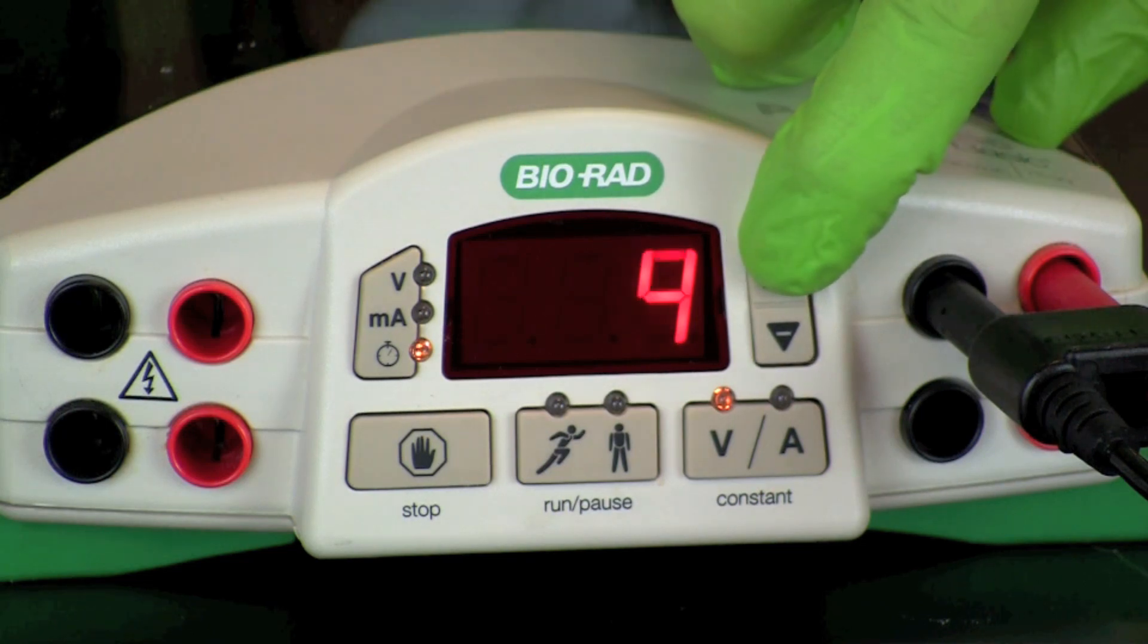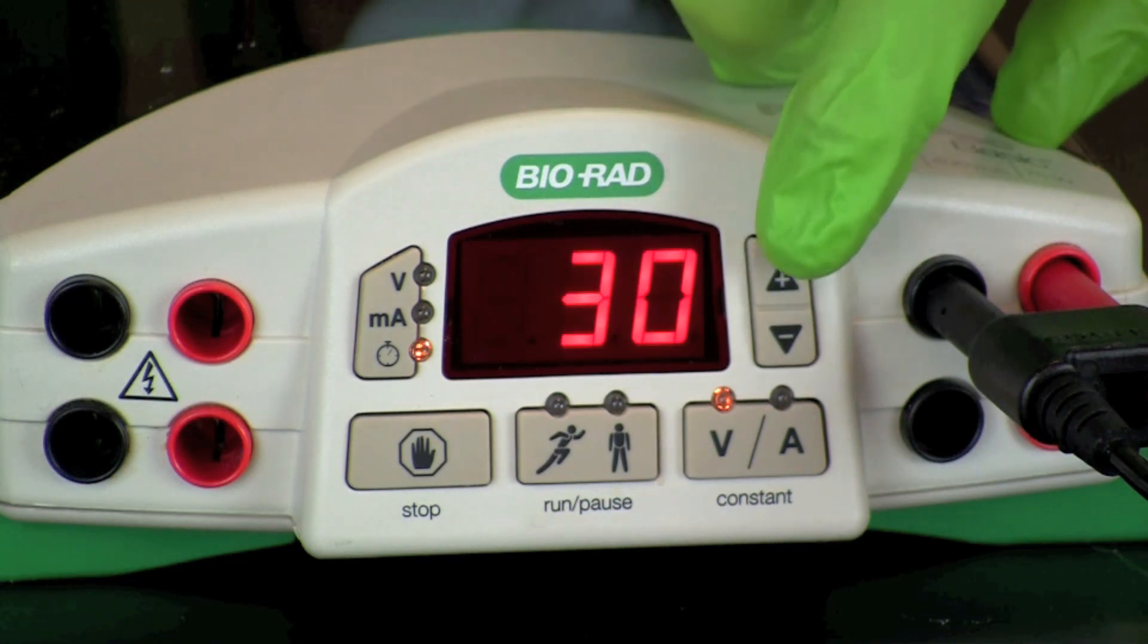If a timer is available, set the timer for 30 minutes. As the power is turned on, look for the release of bubbles from the electrode in the inner chamber.